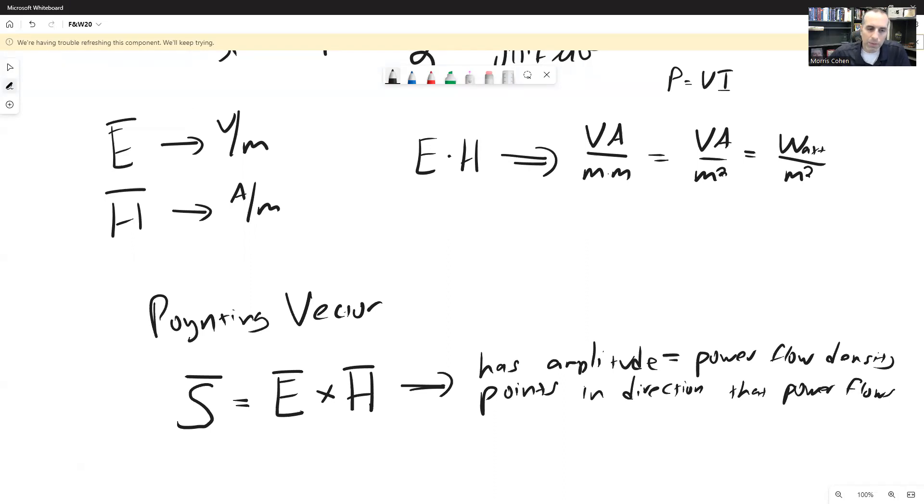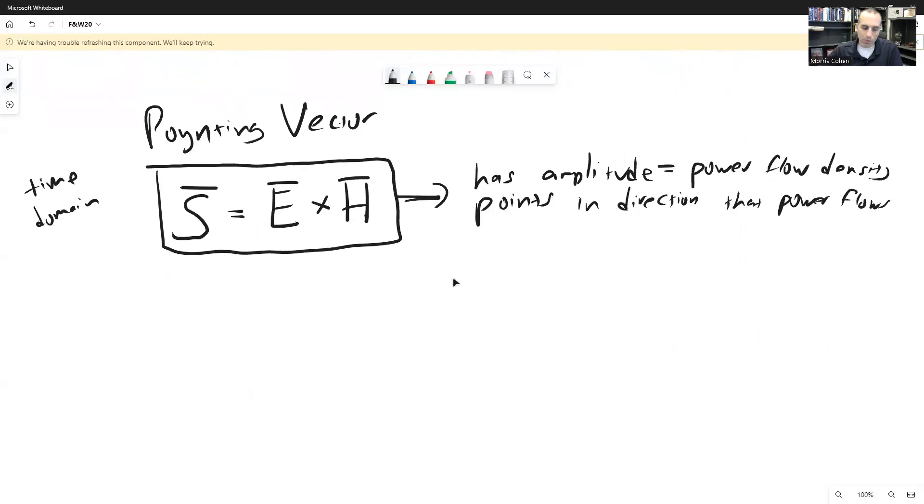Now this Poynting vector, as I've defined it here, S equals E cross H, this is correct in the time domain. Meaning not in the phasor form. In the phasor domain, when you're dealing with one frequency, and you have approached everything as if it's a phasor, it's a little bit more complicated because we've got electric fields and we've got magnetic fields. And you think about what E cross H is, it's sort of varying rapidly. It's basically the multiplication of the two sine waves. And so the actual Poynting vector for a time harmonic wave, we're sinusoidally varying, is generally done with the time average of the power.